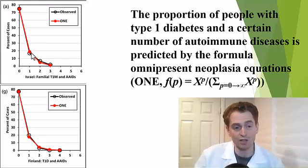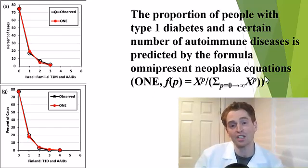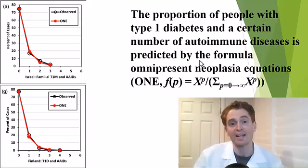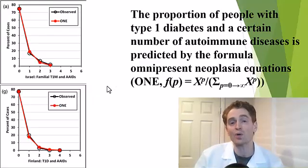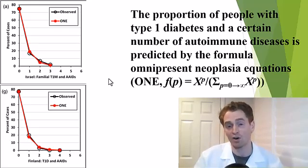You can see the observed rate of multiple other autoimmune diseases is perfectly predicted by a formula called ONE — omnipresent neoplasia equations — which has been used to predict the risk of cancer. Basically, it assumes there is some external environmental factor that varies continuously in the population, increasing the risk of autoimmune diseases in general. The observed rate of multiple autoimmune diseases is exactly what you'd expect if there were some single external factor increasing your risk of all autoimmune diseases.